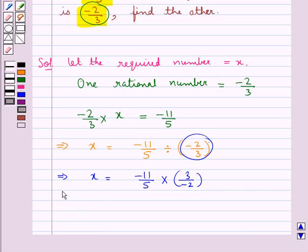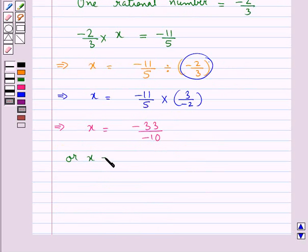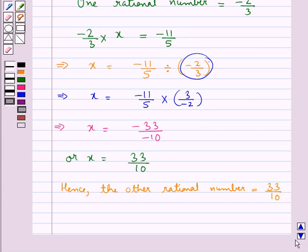We get that x is equal to minus 33 upon minus 10 or you can say that x is equal to 33 upon 10. Hence, the other rational number is equal to 33 upon 10.